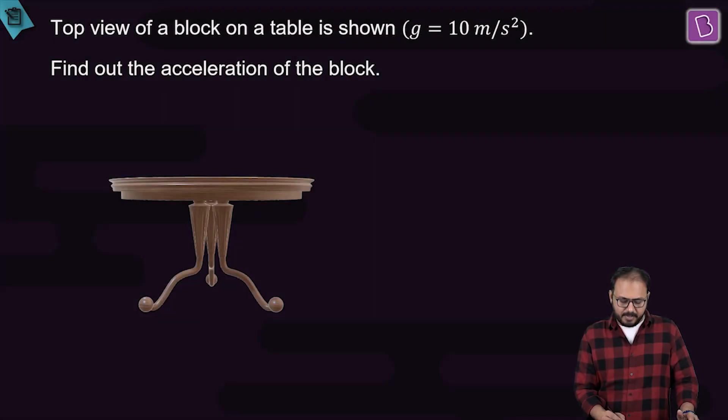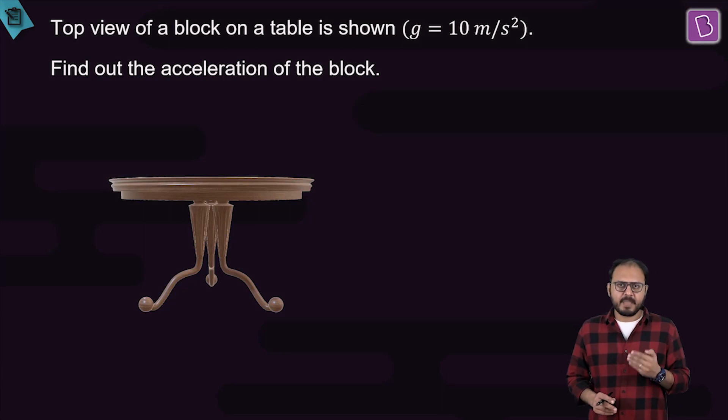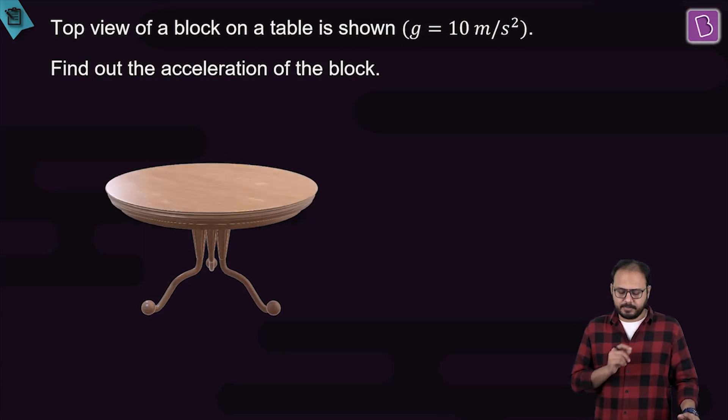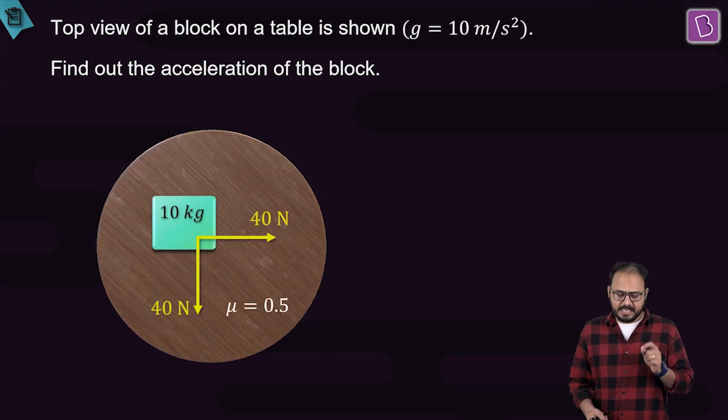Can you see a table on your screen? This is called the front view, or elevation. Now look at the table from the top. There is a block kept on it.